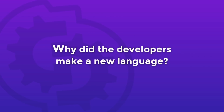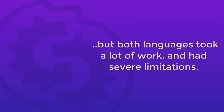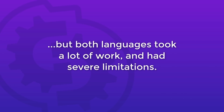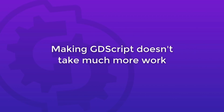Another common question is: why did the developers make a new language, GDScript, instead of using Python or Lua directly? Actually, years ago, Godot used Python, then Lua. Both languages' integration took a lot of work and had severe limitations. For example, threading support was a big challenge with Python, and it's something game developers really need to make complex commercial games. In the end, developing a dedicated language doesn't take the developers more work than maintaining an external language's integration, and they can tailor it to their needs. They're now working on performance optimizations and features that would have been difficult to offer with third-party languages.